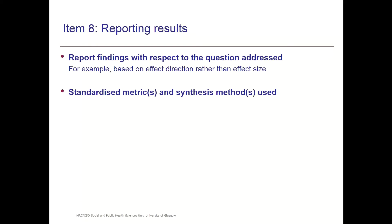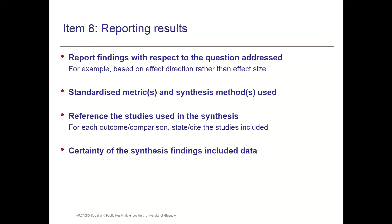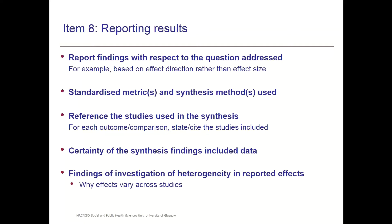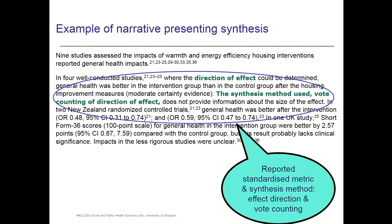The sorts of things that should be included in this item are: reporting the findings in relation to the questions addressed — so it might be about effect direction rather than effect size — reporting the synthesis methods used, referencing studies used, and then the certainty of the findings. If you've investigated heterogeneity, you would report what variation and explanation for the heterogeneity you identified. Here's an example in a results section. The highlighted text in green says 'in four well-conducted studies,' stating the direction of effect — so it's about effect direction rather than effect size — and that general health was better. The synthesis method used was vote counting of direction of effect.